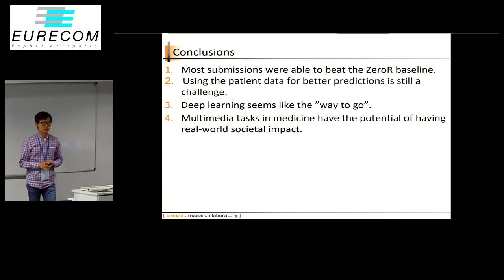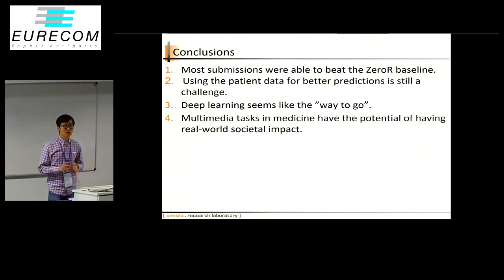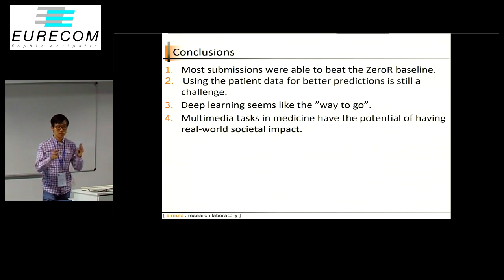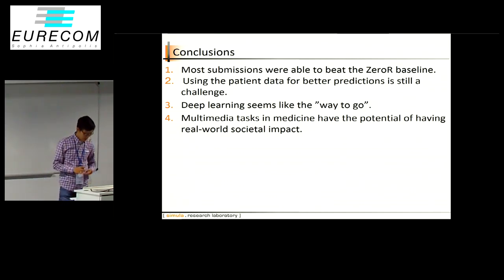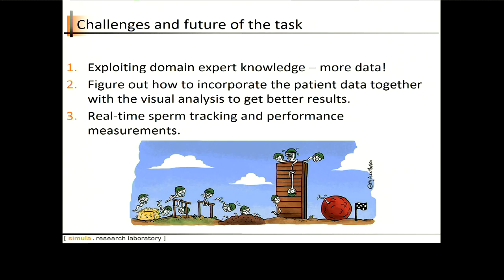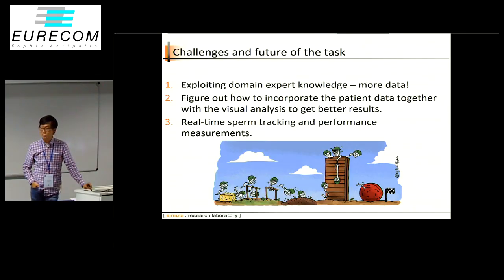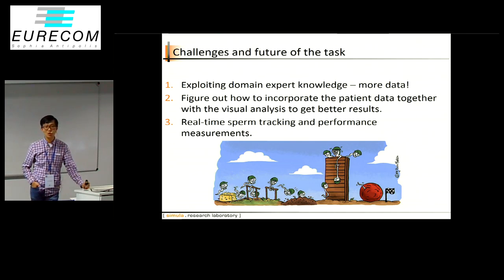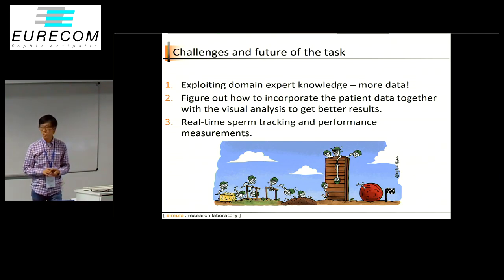For conclusions: all teams beat the zero-hour baseline, which is a positive result. We still don't have any team using the patient metadata, and deep learning is really dominant for this kind of problem. We still have potential in applying this further. For future tasks, we want more data, more participants, better results, and a way to combine patient information with video data — something we didn't succeed at this year. We would also love to have real-time tracking for the semen.